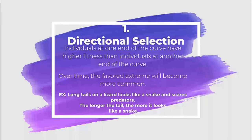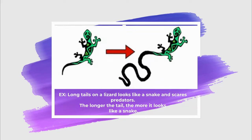In directional selection, individuals at one end of the curve have higher fitness than individuals at the other end of the curve. Over time, that favored extreme will become more common. For example, long tails on a lizard look like a snake and scare predators — the longer the tail, the more it looks like a snake. So the short tail is going to die off, the long tail is going to increase, and my graph is going to shift in one direction.